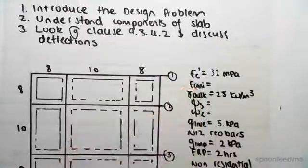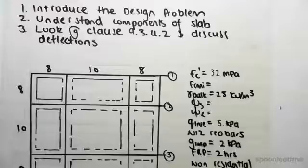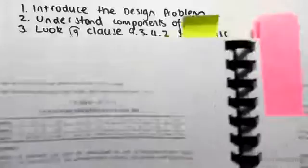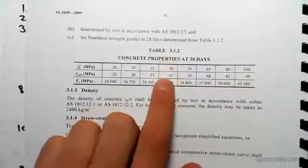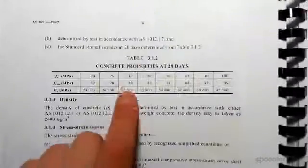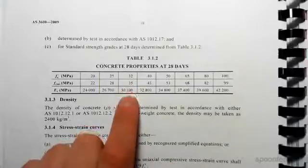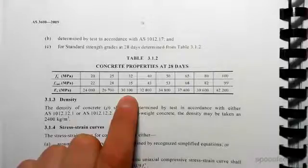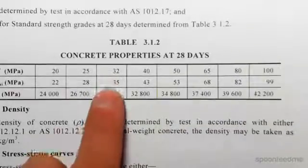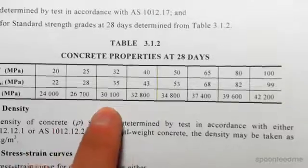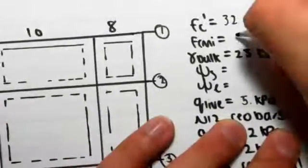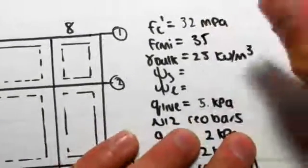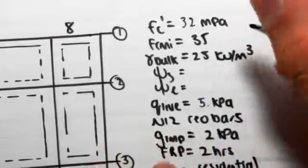So just some properties: we've got an fc dash of 32 MPa. We can then find fcmi from the code, so we would turn to table 3.1.2. We have fc dash 32 MPa, so we have fcmi of 35 and E of 30,100. So 32, we have 35, and Ec would be 30,100.